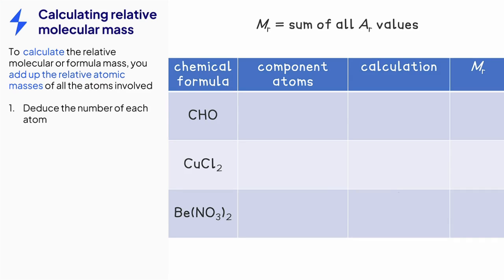Step one is to determine the number of each atom in the compound. CHO contains one carbon, one hydrogen and one oxygen. CuCl2 contains one copper and two chlorine atoms because the small two belongs to the element before. Be(NO3)2 contains one beryllium, two nitrogens because the small two belongs to everything inside the bracket and six oxygens. Three oxygens inside the bracket which is then doubled because of the small two after the bracket.